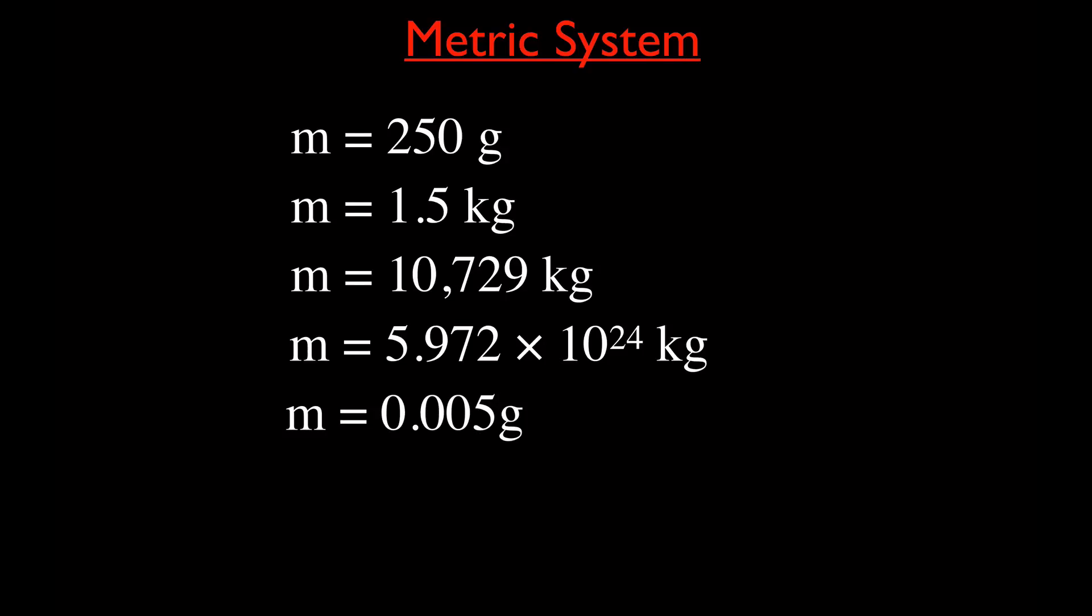And you could have small things also, or things with a low mass as 0.005 grams, which is the same thing as 5 milligrams. This is 5 one-thousandths of a gram. These two are equivalent to each other. And then we can have something really small. If you know what this is, 9.1 times 10 to the minus 31 kilograms, that's the mass of an electron.